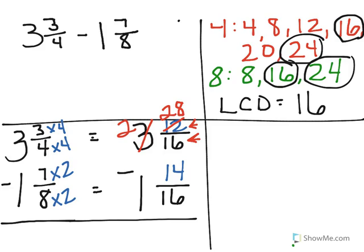I now can go ahead and subtract. I'm going to put down my denominator because that stays the same. So there's my 16. And when I subtract 28 minus 14, I'm going to get 14. So I have 1 and 14 sixteenths. And 2 minus 1 is 1.